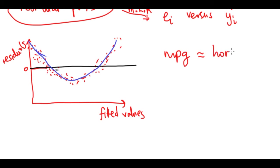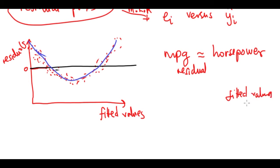For example, if you regress mpg on just horsepower and then plot the residuals versus the fitted values without using a non-linear term, you will see a U-shape. That U-shape is a clear indication that there is non-linearity in the data — a pattern indicates non-linearity.